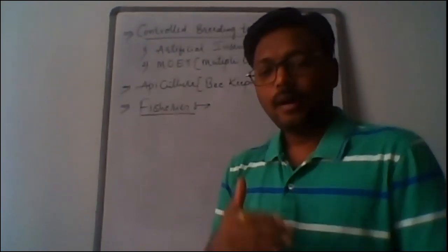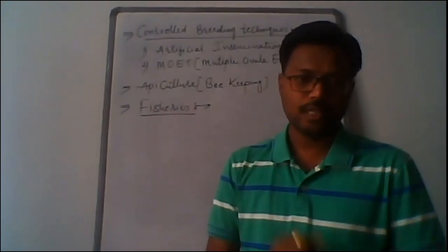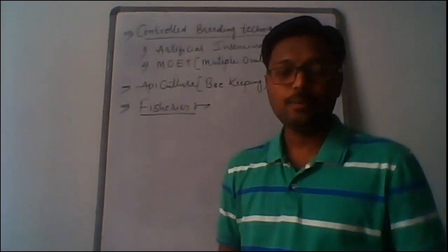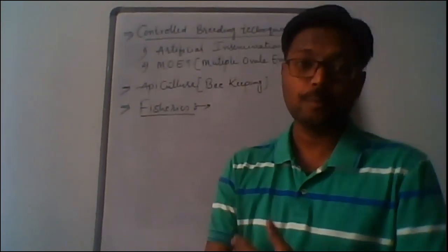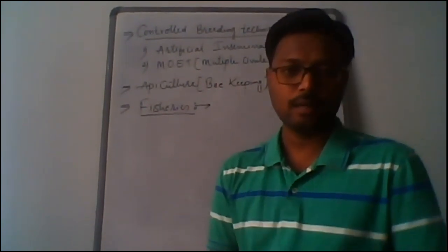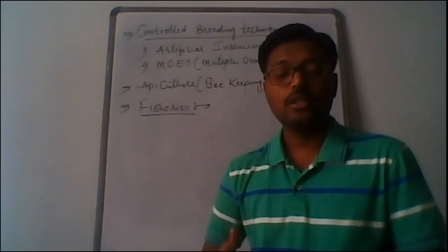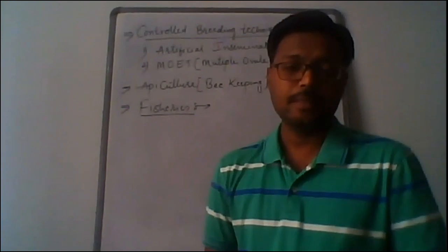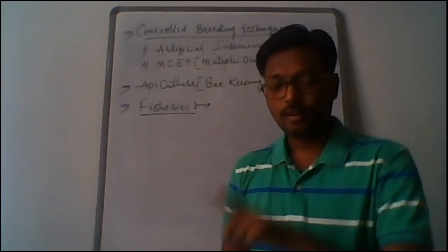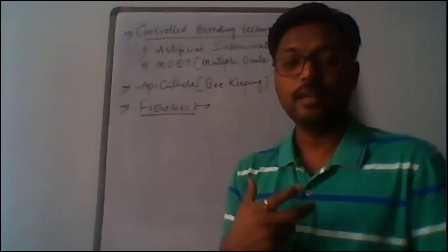By this technique we can produce a number of progeny within a short period of time. Multiple ovulation means that per ovulation, more than three to four ovules are produced — that is, seven to eight ovules are released per one ovulation — because of artificial induction. The whole process of ovulation is controlled by different hormones.